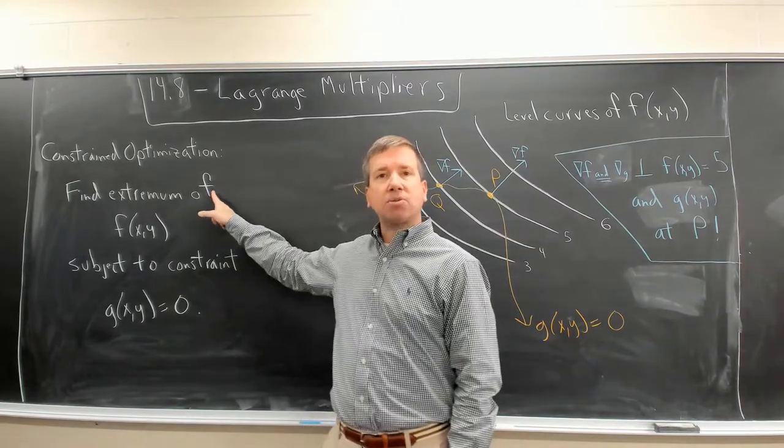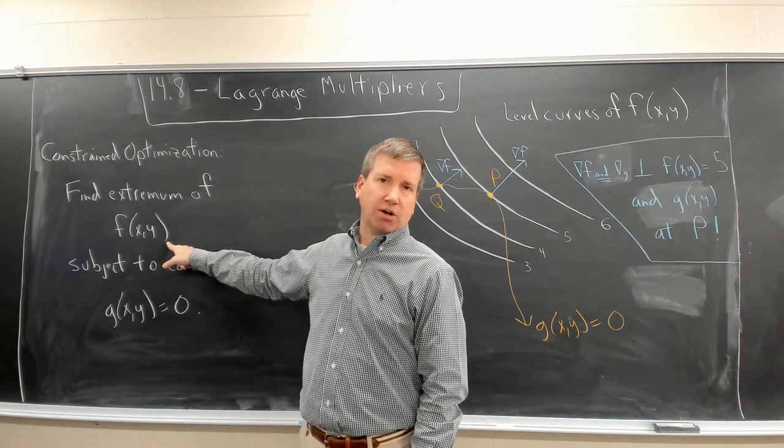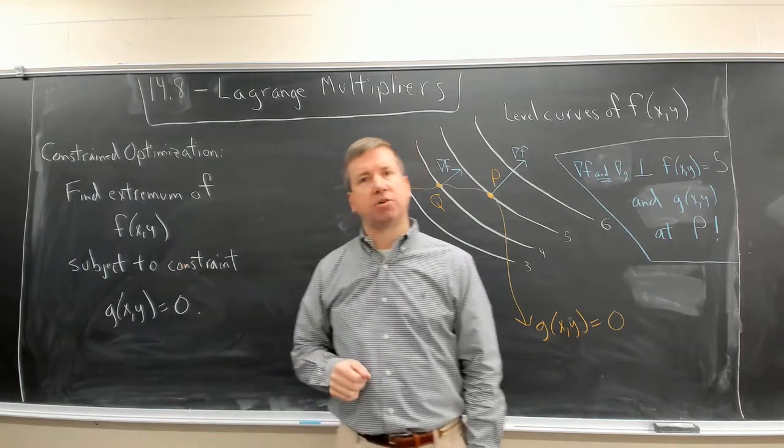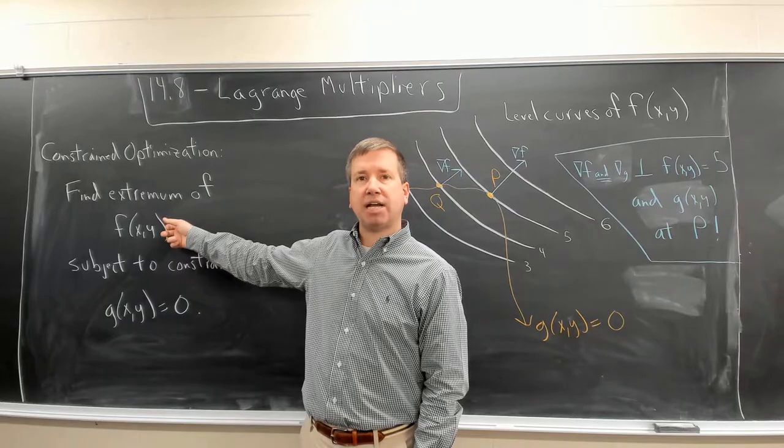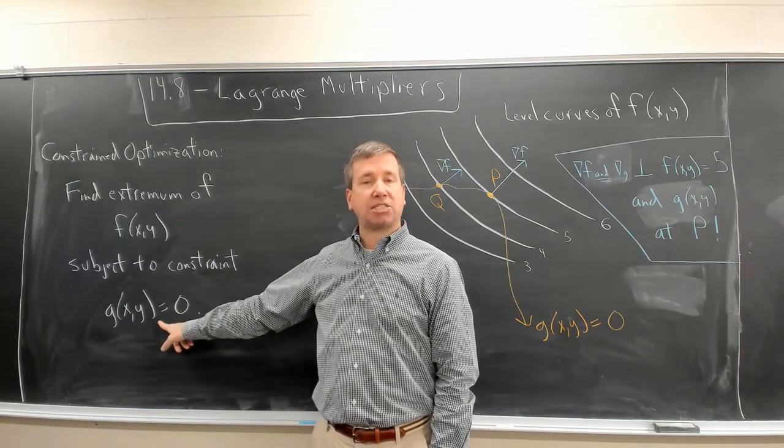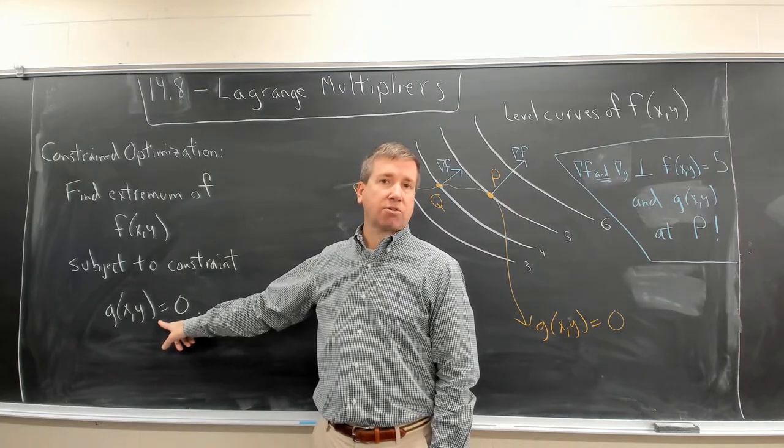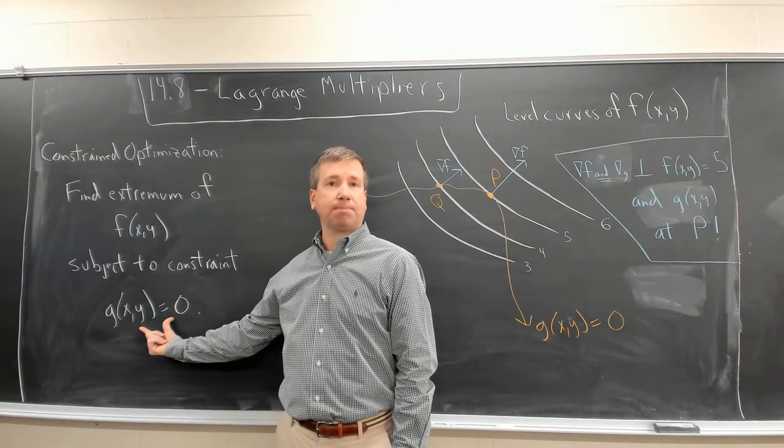We want to minimize or maximize f. That's usually called the objective function. We're trying to minimize or maximize an objective function subject to a constraint on x and y. And one way to describe this constraint is with this algebraic equation right here.